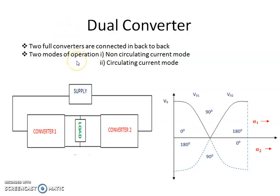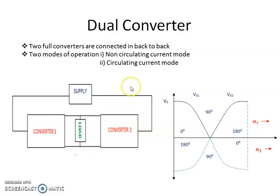Depending upon the operation, there are two modes for a dual converter. The first mode is known as non-circulating current mode and the second mode is known as circulating current mode. In non-circulating current mode, either converter 1 or converter 2 operates at a time. After the operation of converter 1, we turn on converter 2, or after the complete operation of converter 2, we turn on converter 1. So, there is no circulating current present inside the converter circuit. But in the case of circulating current mode, we operate converter 1 and converter 2 simultaneously.